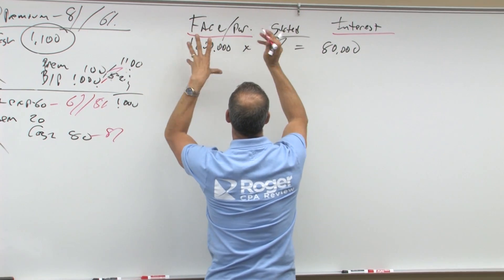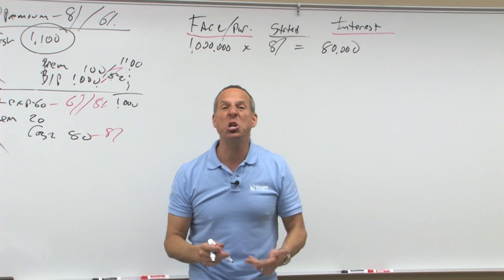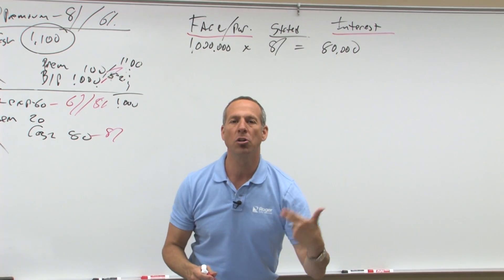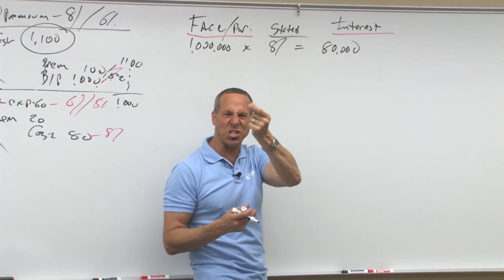The face will be a lump sum. The interest will be an annuity, an equal amount to be received or paid. In this case, eight percent of a million. So we use the stated rate to figure out the cash.